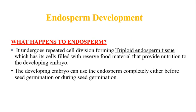What is endosperm development? The primary endosperm cell undergoes continuous mitotic divisions and forms a triploid endosperm tissue. The primary endosperm nucleus turns into a primary endosperm cell, which further divides continuously to form triploid endosperm tissue. This tissue has cells filled with reserved food material and provides nutrition to the developing embryo.